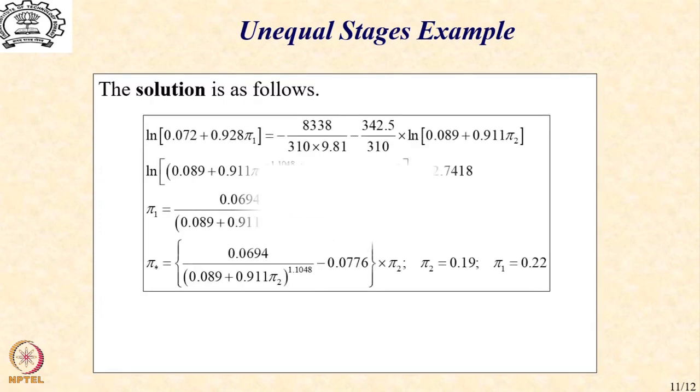So, the solution in this case is as follows. Again, I take the pi 1 and substitute into the constraint relation with the velocity of 8338 meters per second and get an expression of pi 1 in terms of pi 2 as 0.0694 divided by 0.089 plus 0.911 pi 2 to the power 1.1048 minus 0.0776. We define pi star as product of these two, differentiate this with respect to pi 2. I have skipped those intermediate steps but my suggestion is that you verify those steps. And once you verify those steps, you can obtain the solution for pi 2 as 0.19. And if you take this 0.19 as pi 2 and substitute into pi 1 relation, you can show that pi 1 will be 0.22.